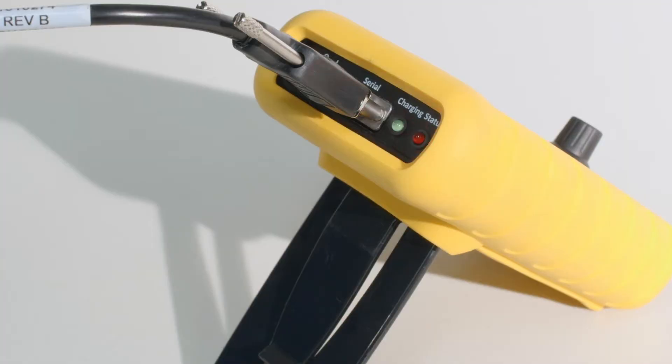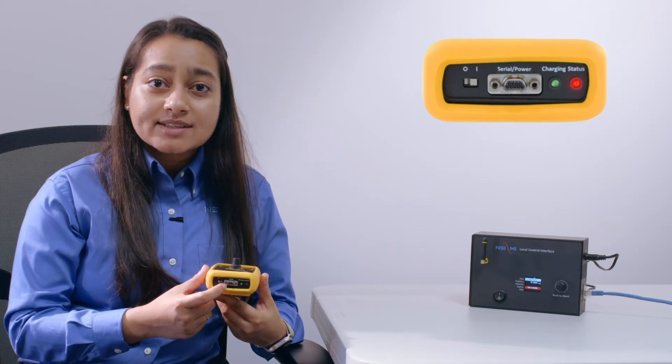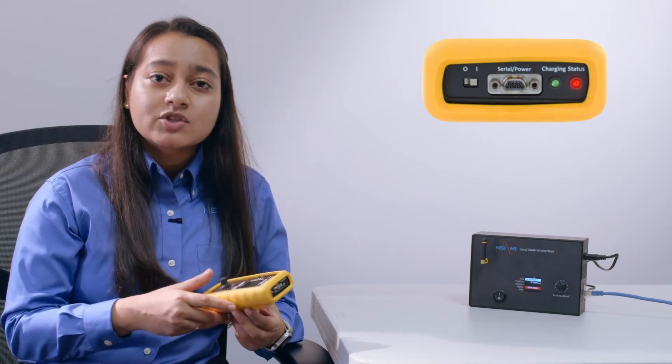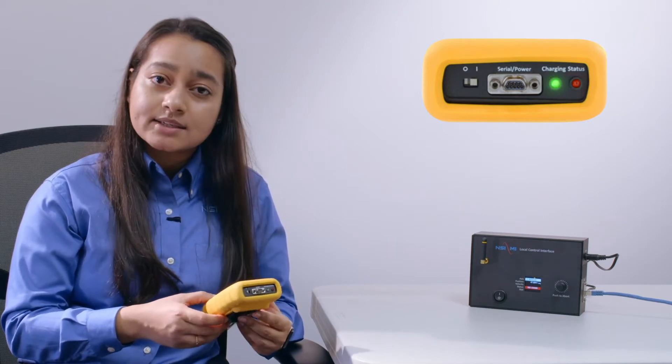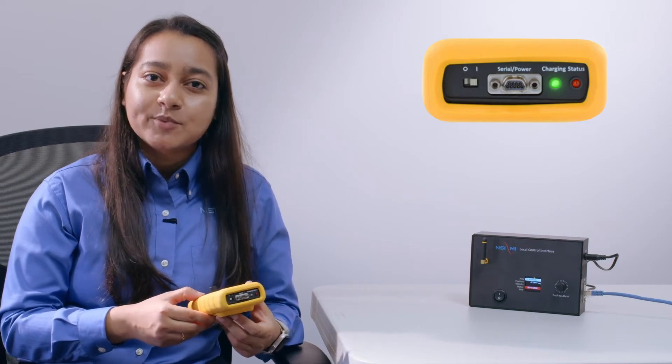The wireless LCU also has two LED status indicators on the front panel. The red LED blinks at a fixed rate while the LCU is charging and the green LED turns on when the LCU is completely charged.